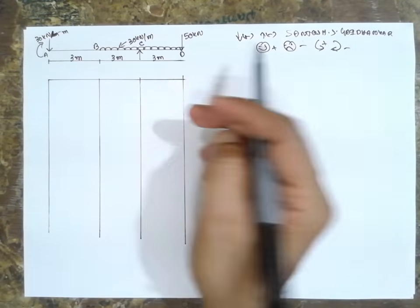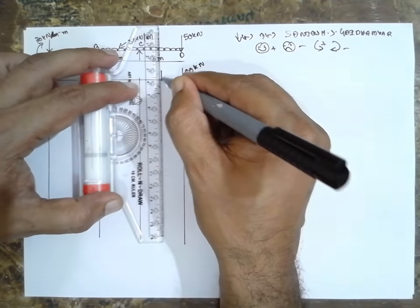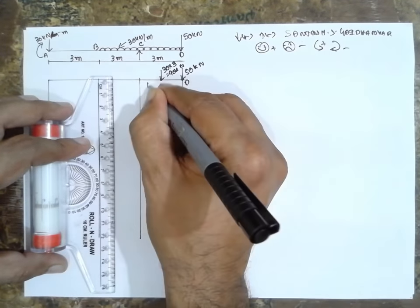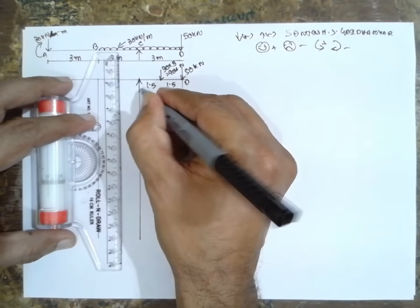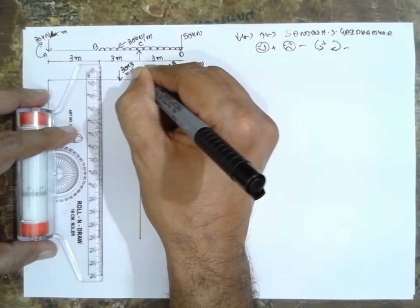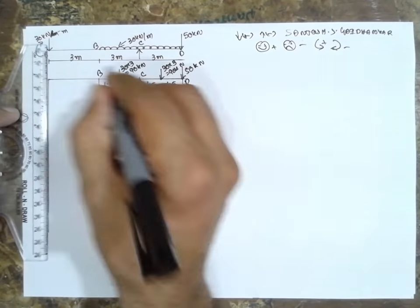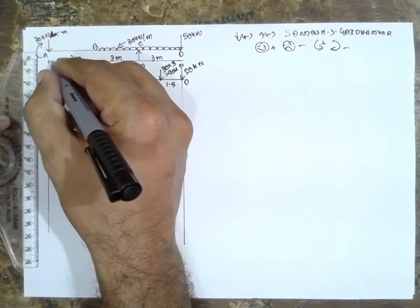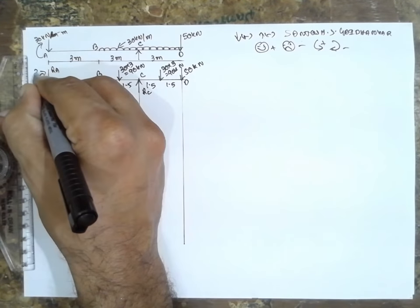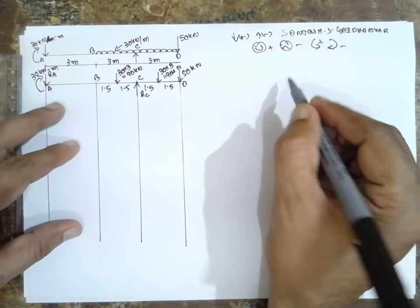First, I will convert the UDL into a point load. There is a 50 kilonewton load at D. The UDL of 30 kilonewton per meter over 3 meters gives 90 kilonewton acting at 1.5 meters from each side. The reactions to find are RC and RA, and there is a couple of 30 kilonewton meter at A.